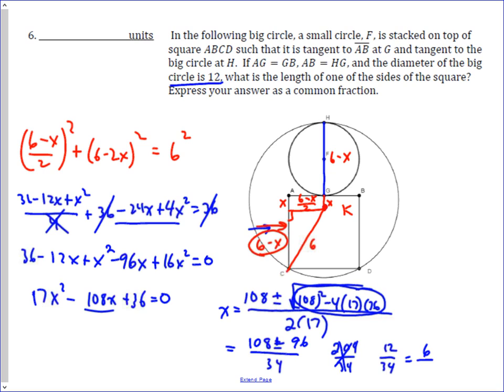6 over 17. So x is 6 over 17, so the side length of the square is 6 minus x, so we do 6 minus 6 over 17, which gives you 96 over 17. So the correct answer was 96 over 17. Very difficult, challenging problem, but also a very good application of using what you know about a circle and the Pythagorean theorem to solve a problem.